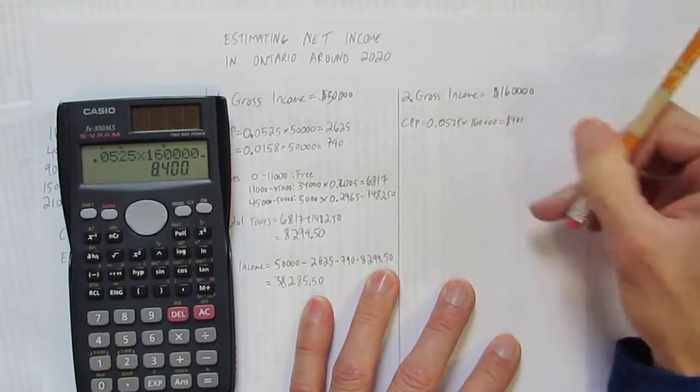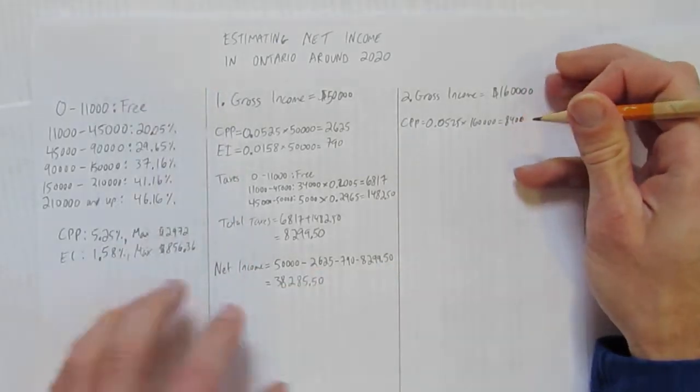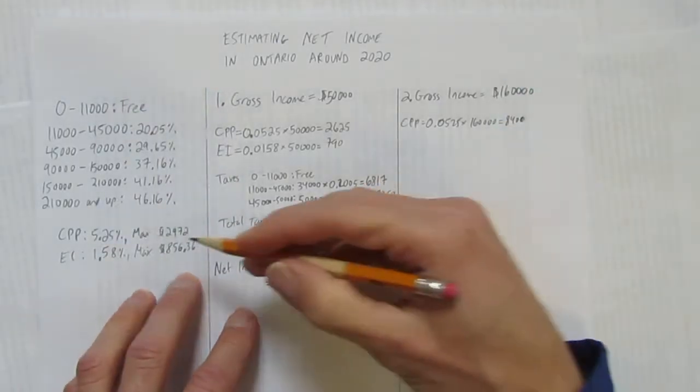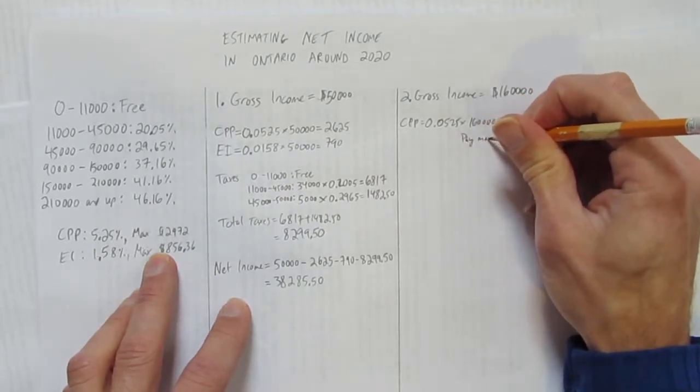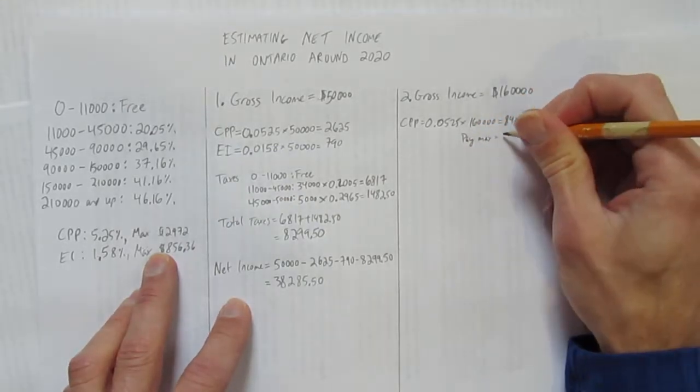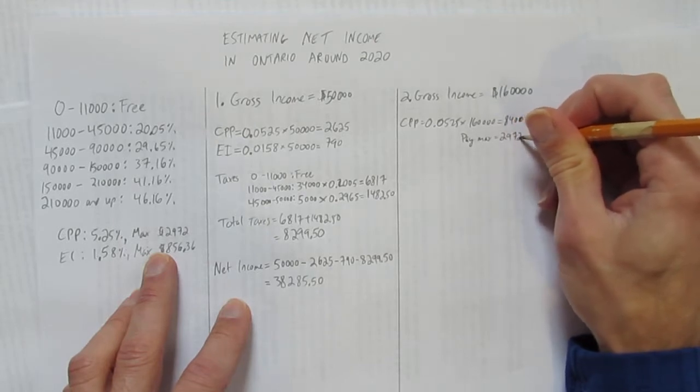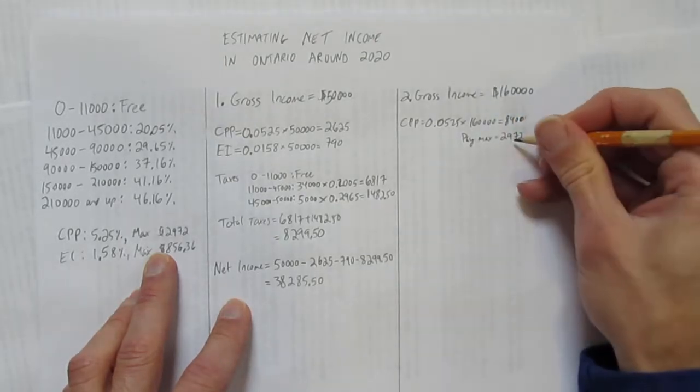But remember, there's a max. You don't pay $8,400. You only pay the max. So I'm going to write that in here. Pay the max. You show the calculation, but then you tell the reader you're paying the max of $2,972.